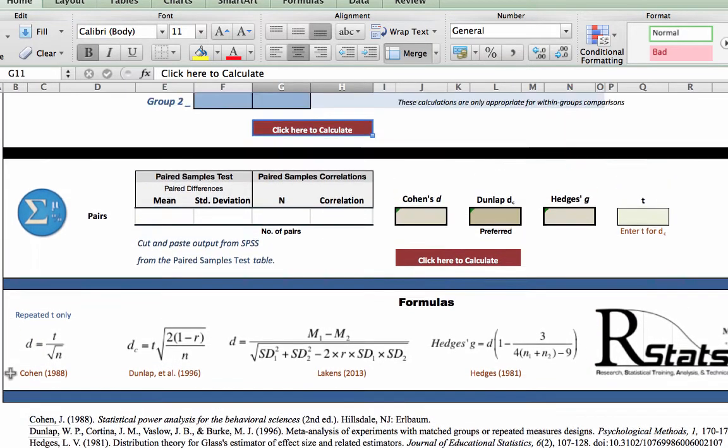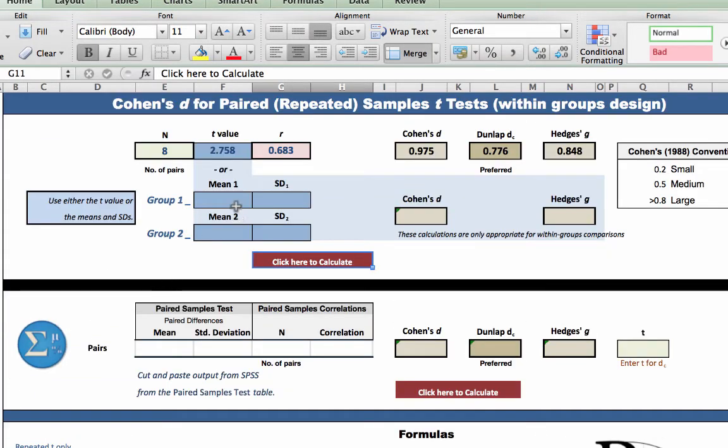The second option, or maybe sub-option in blue, is for when you have not yet run a t-test, but you have the group descriptive statistics. You can enter the mean and standard deviation for each group. Group one, mean 6.38, standard deviation 1.408. Group two, mean 5.13, standard deviation 1.727. Plus, we still have the N for the number of pairs. That will give you Cohen's D and Hedges' G, but not the Dunlap correction, which of course requires a correlation coefficient.